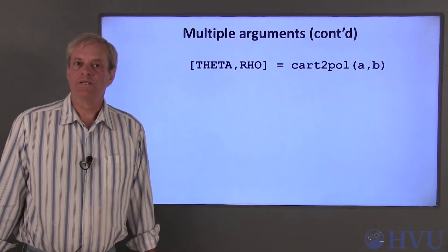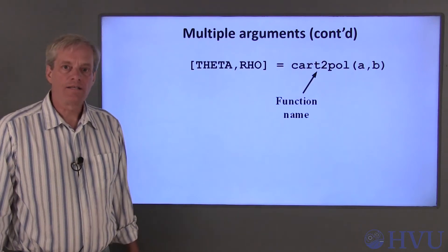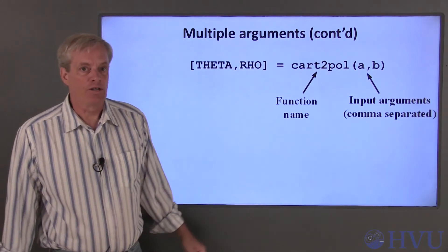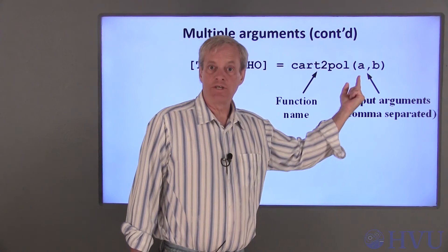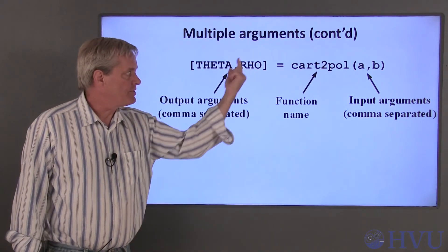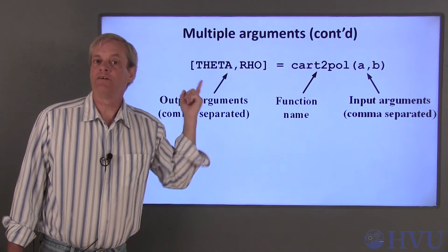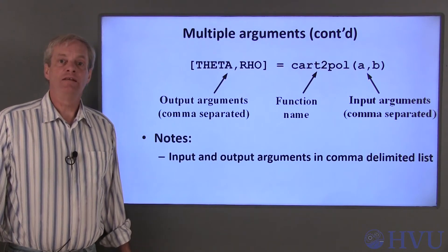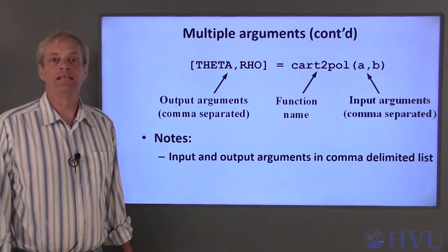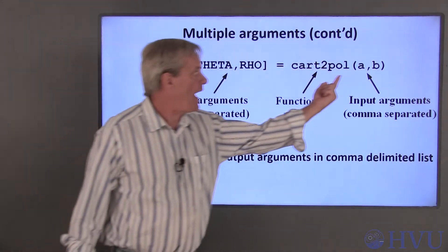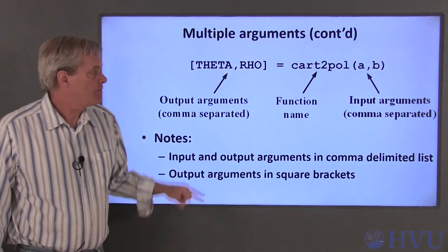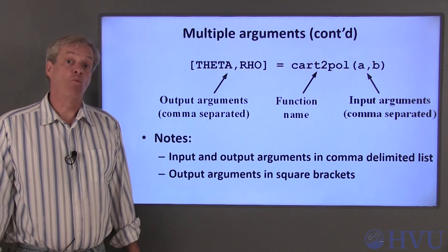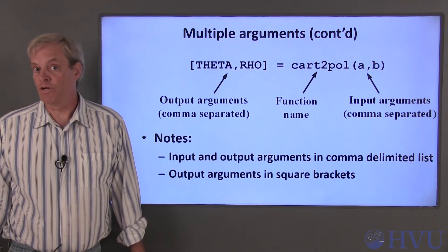Let's look at the cart2pol syntax in a little more detail. All Octave functions have a name. This function's name is cart2pol. The input arguments are provided in parentheses after the function name. The output arguments are listed on the left of the assignment operator. There are a few details about the syntax that you should note. The input and output variables are provided in list form. The arguments are separated by commas. The output arguments are enclosed in square brackets. If there's only one output argument, the square brackets are optional, but if you want to put brackets around a single output argument, it won't hurt anything.